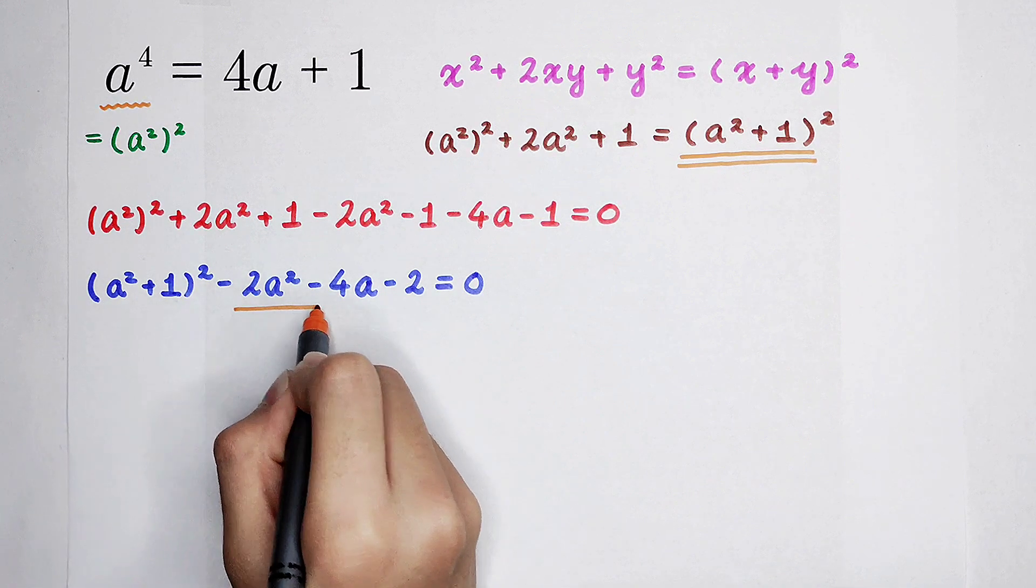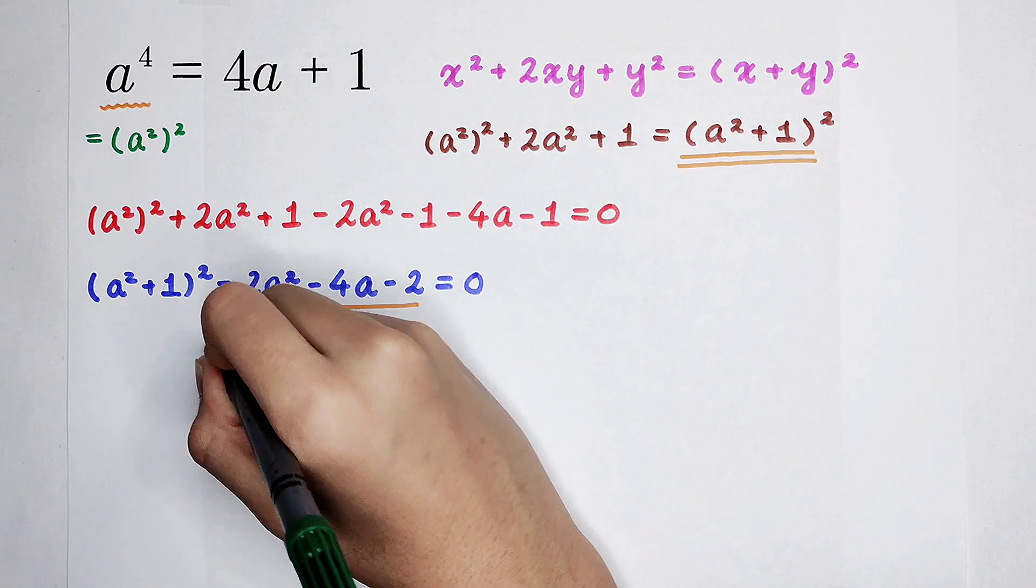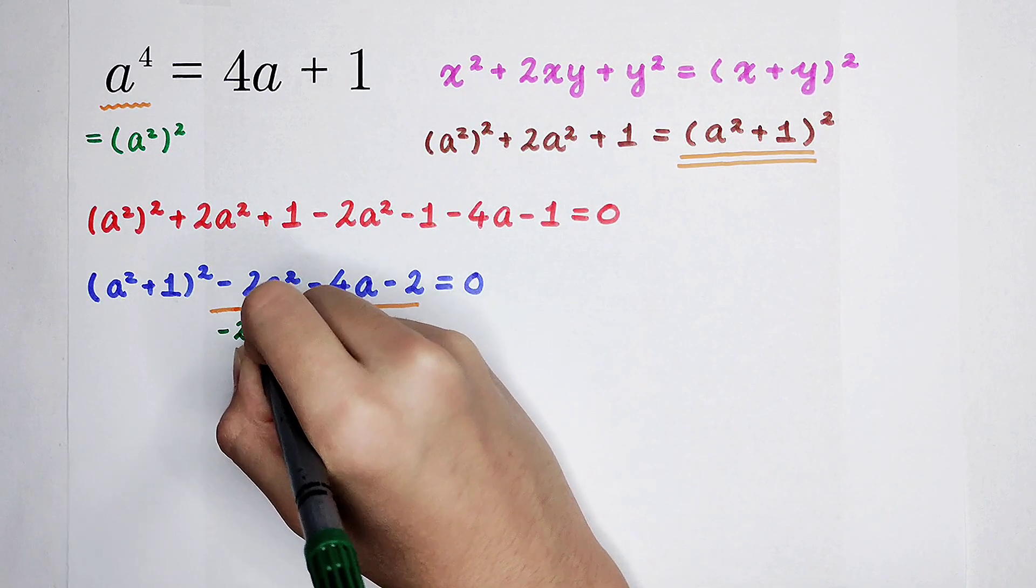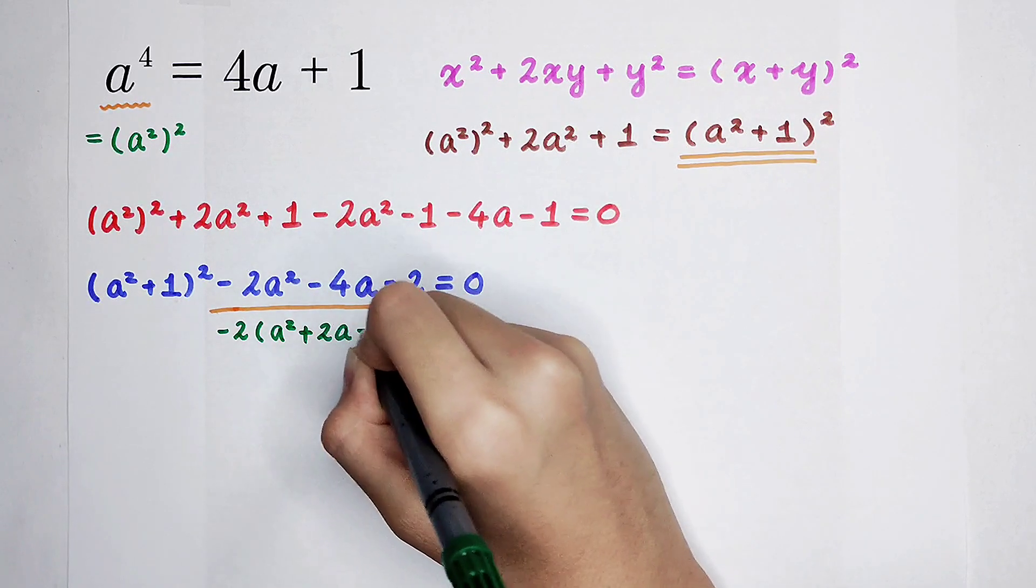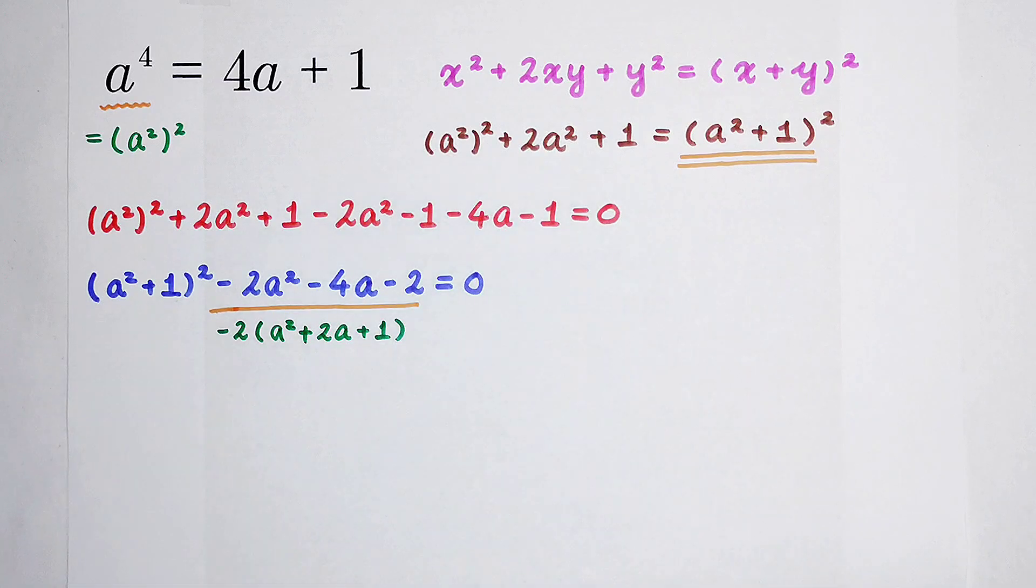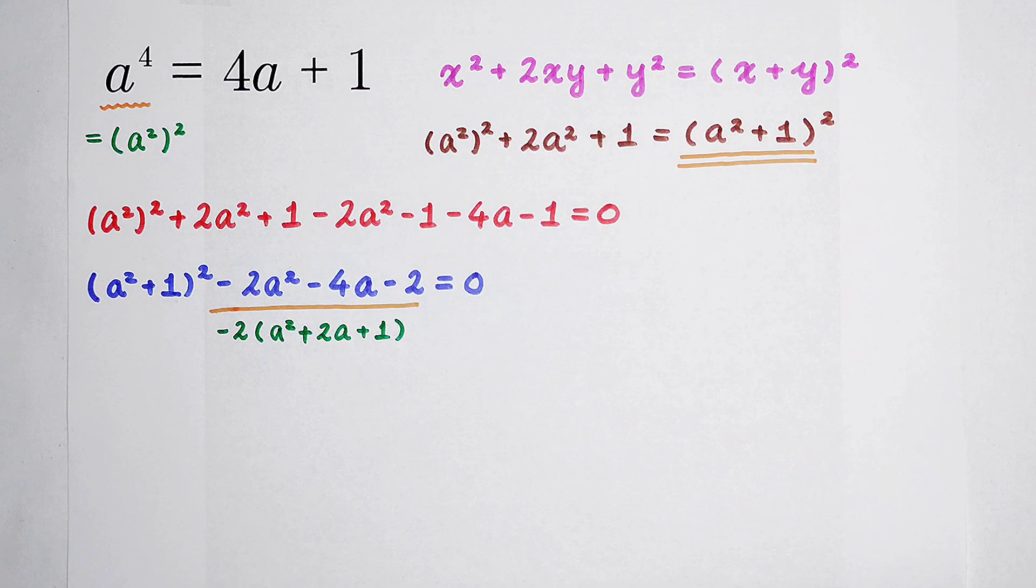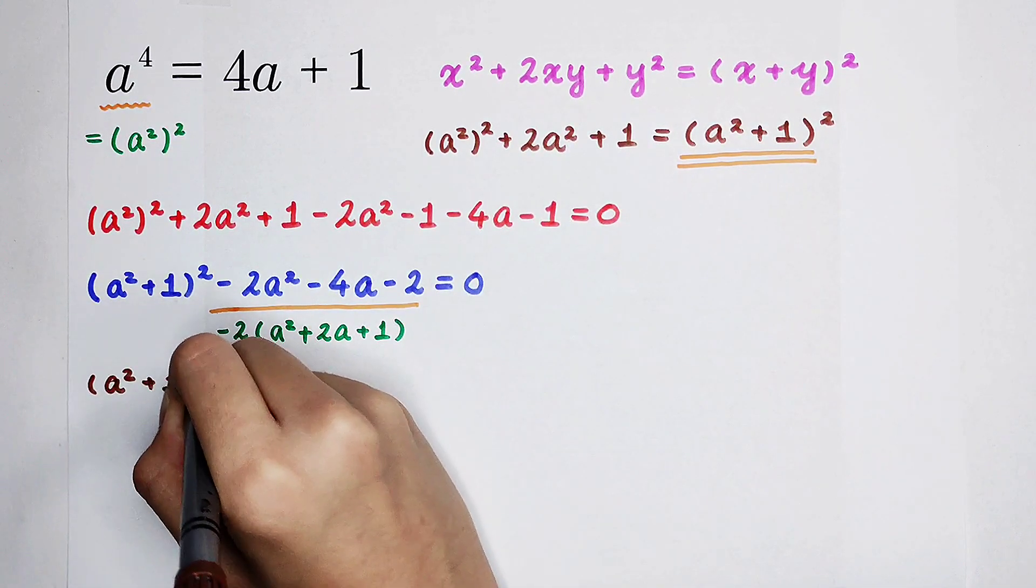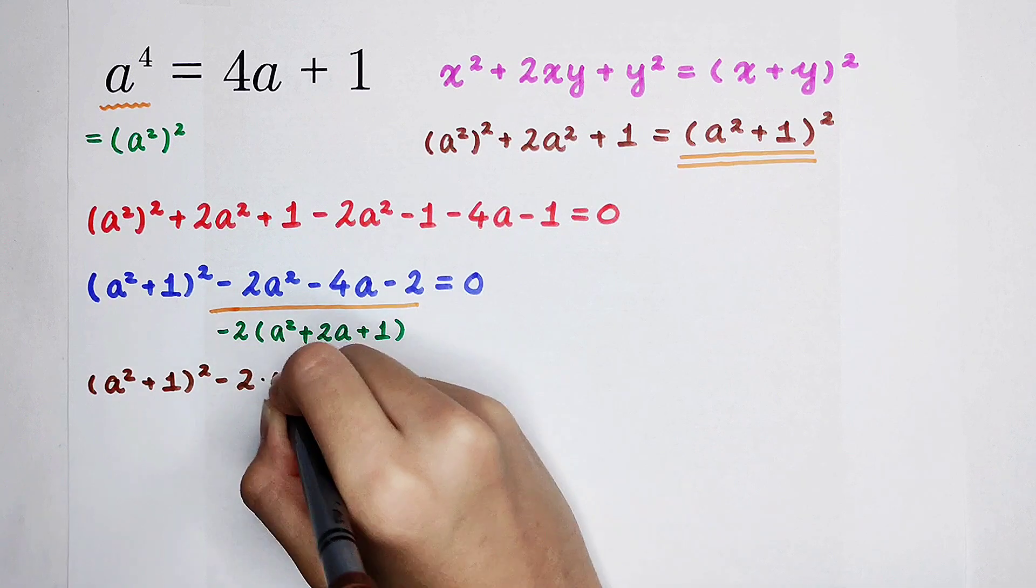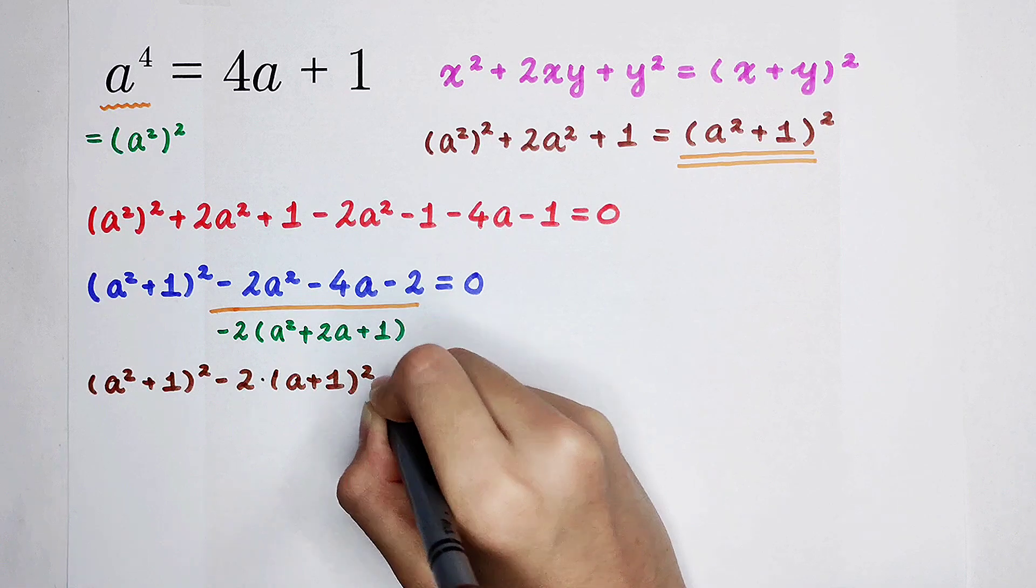Very good. Now, here, in this part, I'm going to take out a negative 2. And that is negative 2 times a squared and then here becomes plus 2a plus 1. Now, what's in the bracket? a plus 1 all squared. So it is a squared plus 1 all squared, minus 2 times a plus 1 all squared is equal to 0.